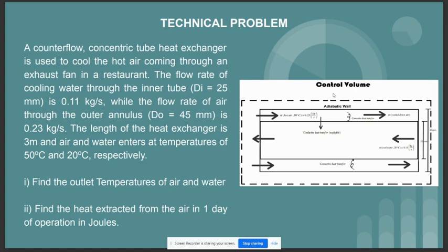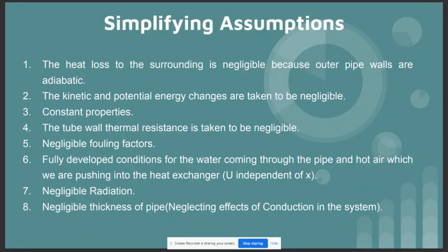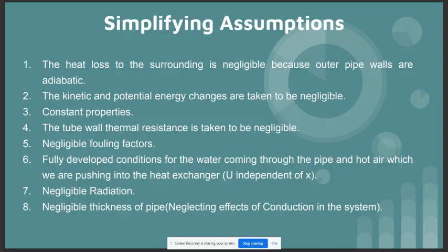Next, we have the simplifying assumptions. We have taken the following simplifying assumptions for our calculations. First, that the heat loss to the surrounding is negligible because the outer pipe walls are adiabatic. The kinetic and potential energy changes are taken to be negligible. All properties of water and air are considered to be constant. The tube wall thermal resistance is taken to be negligible. Following factors are taken to be negligible: fully developed conditions for the water coming through the pipe and hot air which we are pushing into the heat exchanger, negligible radiation, and negligible thickness of pipe, which neglects the conduction in the system. Now this is the used data that we have taken for our calculations.